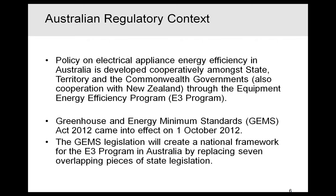In Australia, we have a regulation which applies to electrical appliance energy efficiency, developed cooperatively amongst the States, Territories, and Commonwealth Government — and we also cooperate with the New Zealand Government. Our Equipment Energy Efficiency Programme is a joint program between the Australian Commonwealth Government, the Australian States and Territories, and the New Zealand Government. New Zealand hasn't had a mandatory phase-out of inefficient incandescent lamps, but they do have the same MEPS as we do for compact fluorescent lamps. Most recently, we brought into effect the Greenhouse and Energy Minimum Standards Act in October 2012, which created a national framework for the implementation of our Appliance Energy Efficiency Programme, replacing seven different overlapping pieces of state legislation.